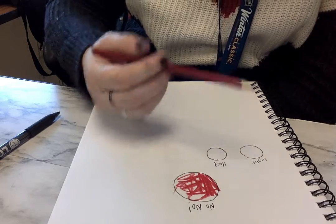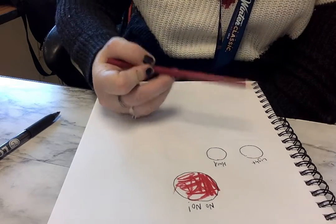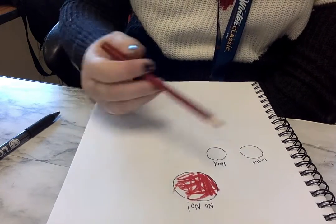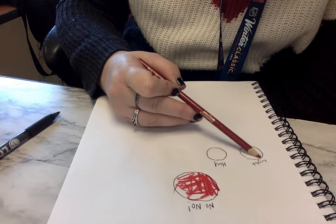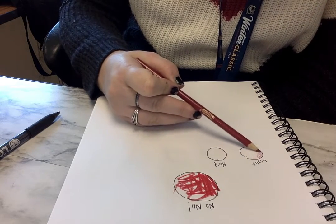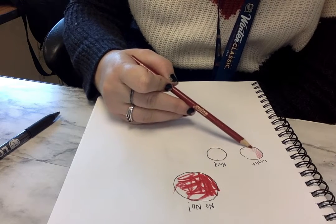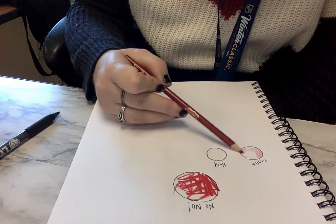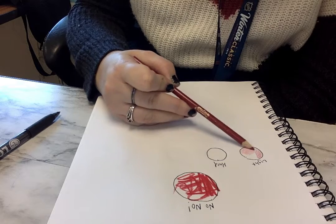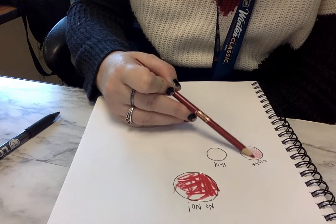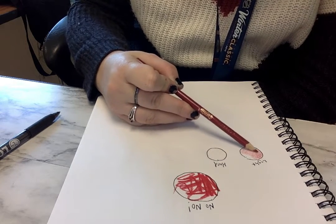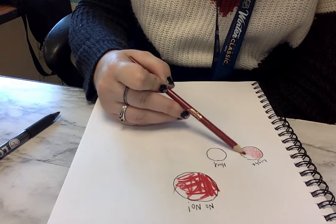When you're doing light pressure I like to hold my pencil back, and to avoid the lines of scribble scrabble I like to do circular motions. Circular motions help blend it all together and you don't see those up and down lines. I'm doing very light pressure, holding my pencil from the back and doing circular motions.